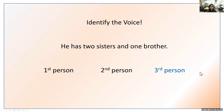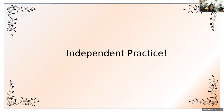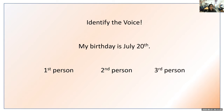Now some independent practice — you'll decide on your own. First: My birthday is July 20th. Is this first person, second person, or third person? If you said first person, you are correct. We have the keyword my, which refers to first person according to your chart.